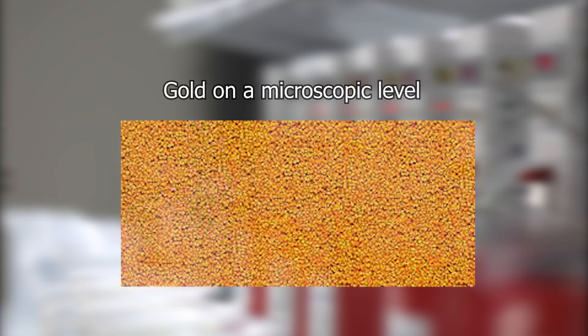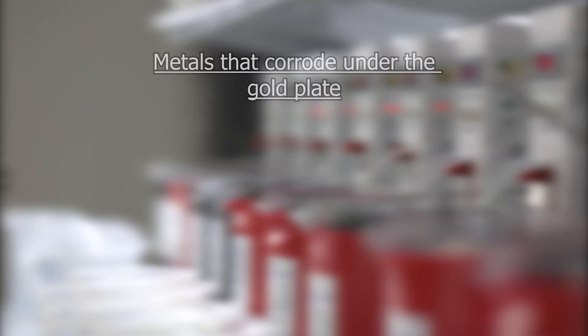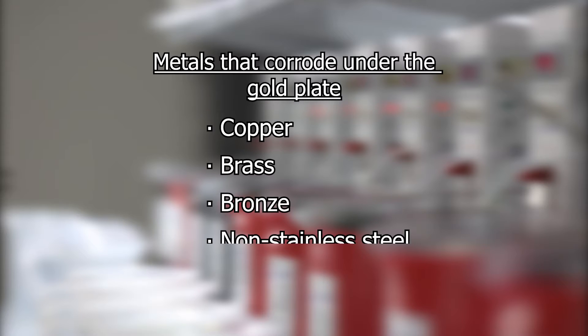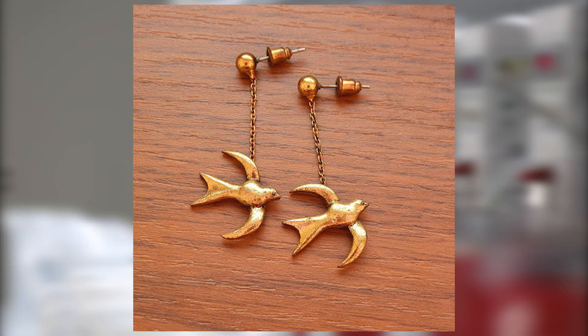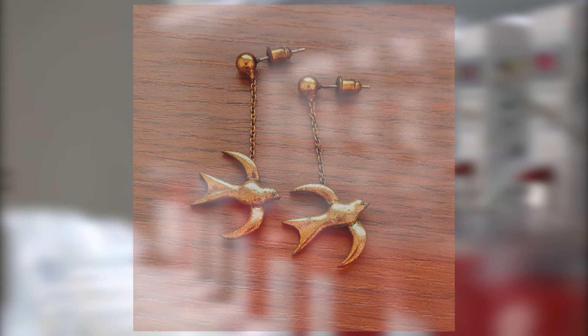All gold plating is somewhat porous on a microscopic level, and this porosity can allow reactive metals such as copper, copper alloys such as brass or bronze, non-stainless steels, and silver to corrode under the gold plating. As the base metal corrodes, the base metal oxidizes and can seep or diffuse through the gold plate and appear on the surface as an unsightly tarnish. This diffusion tarnish can make the gold look dull or dark or seem to wear off sooner than it should, leaving your customers feeling that they didn't get the quality they expected.